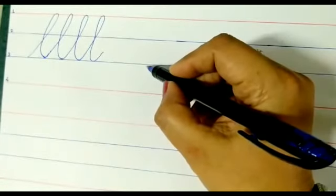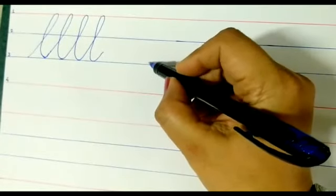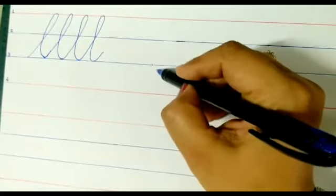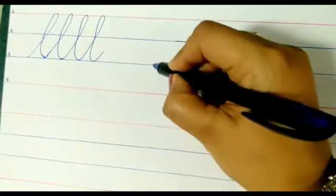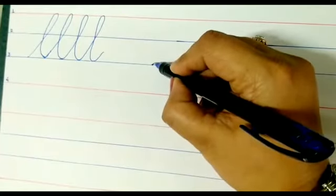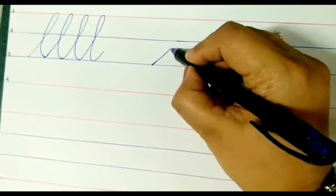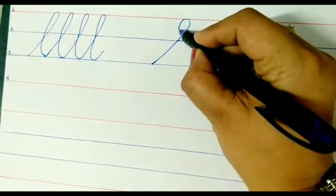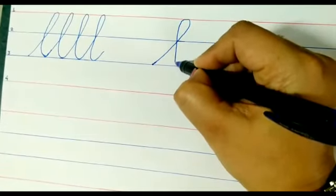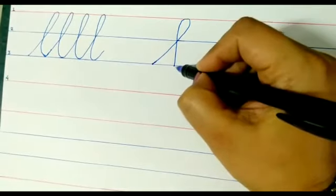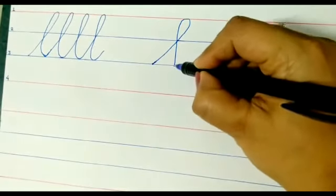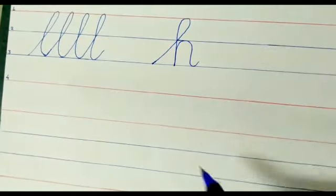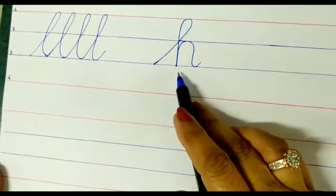Let us start writing small h. Start from the bottom blue line, that is number 3 line from the top. Start from the bottom blue line. Go slanting, make a loop. Make a loop, come down straight. Touch the blue line and make a hump and a tail. That is how we write H.